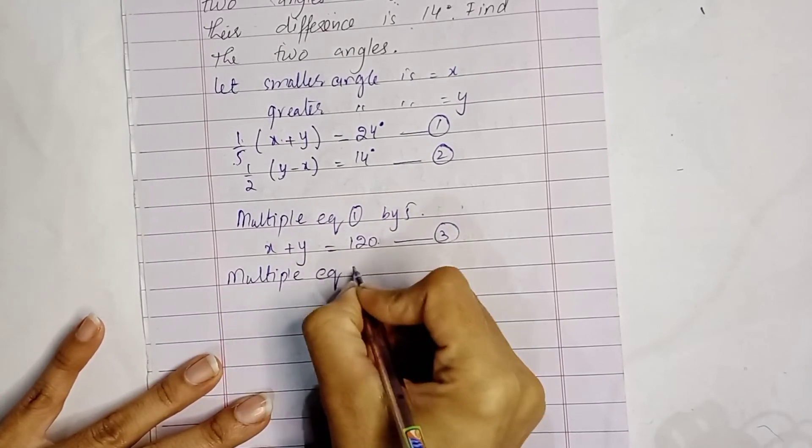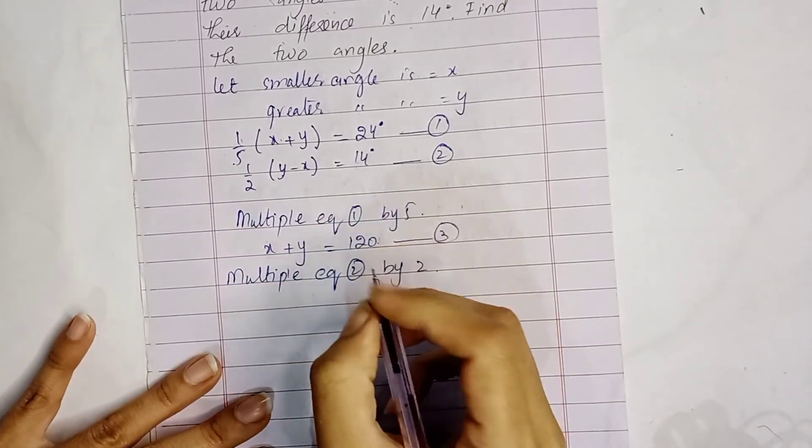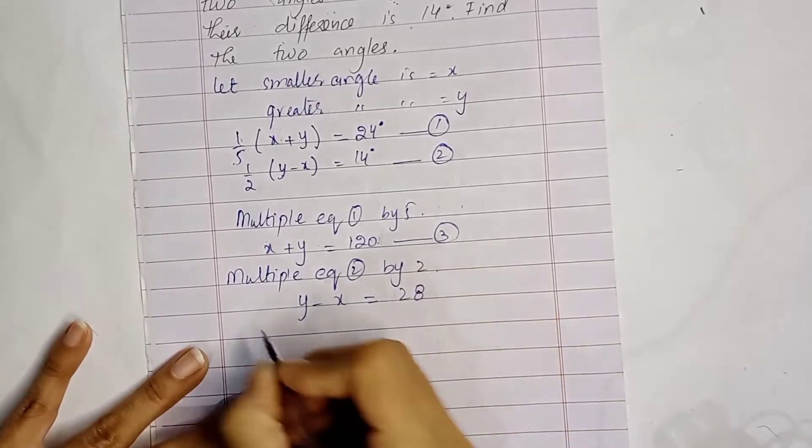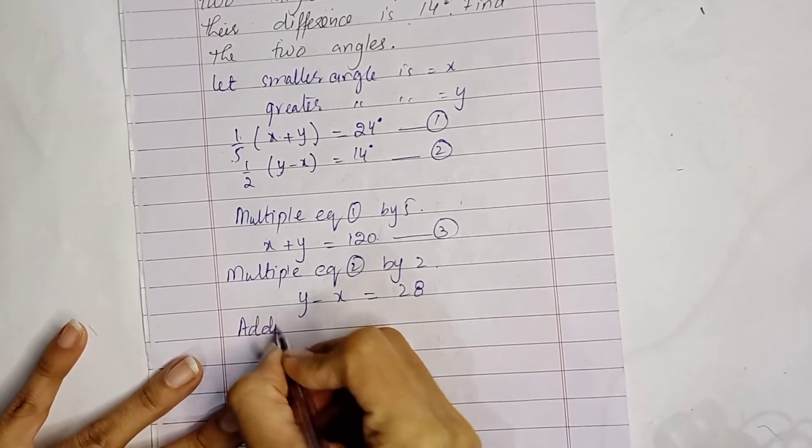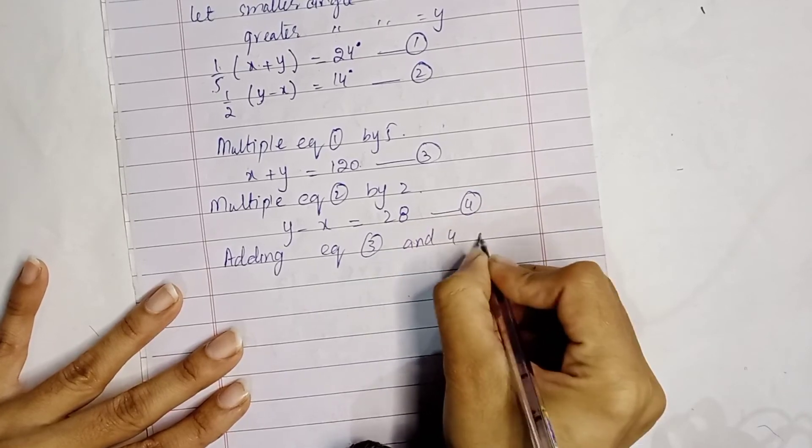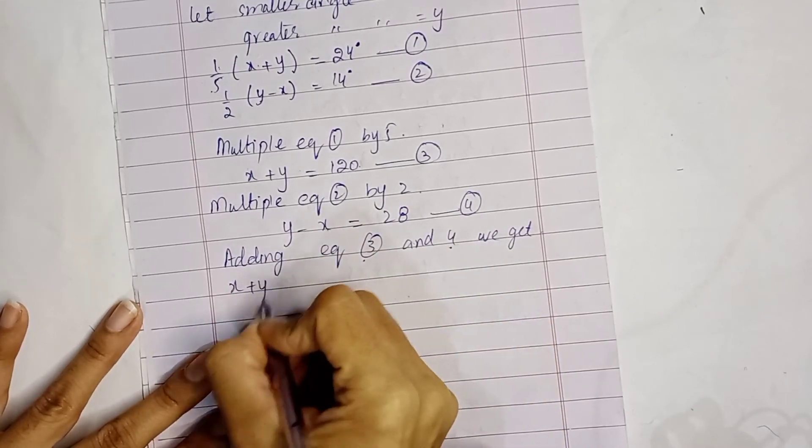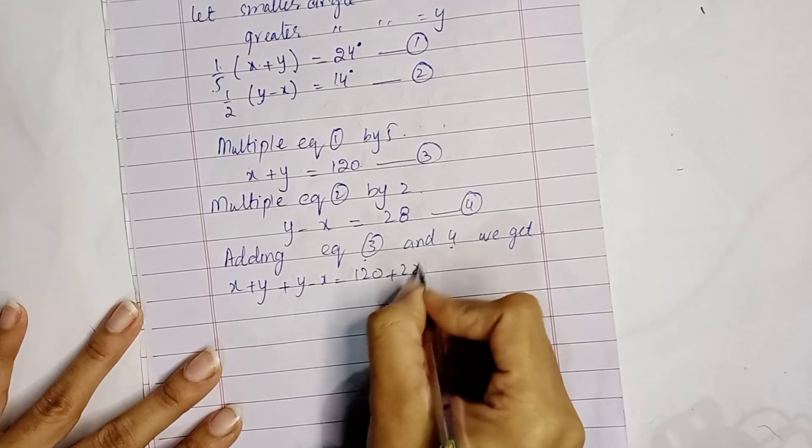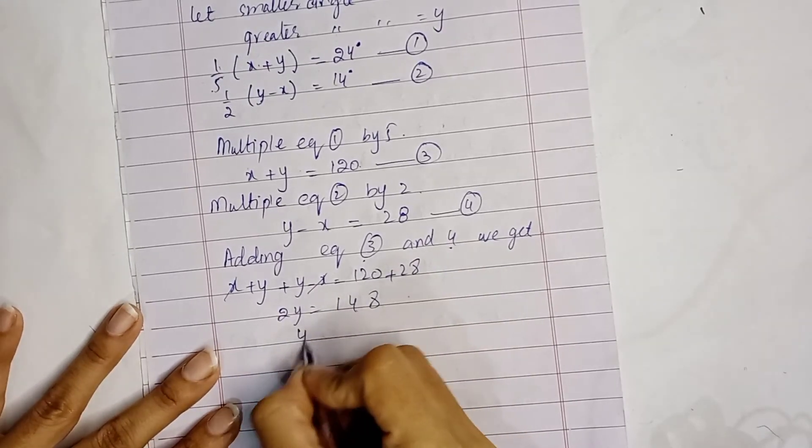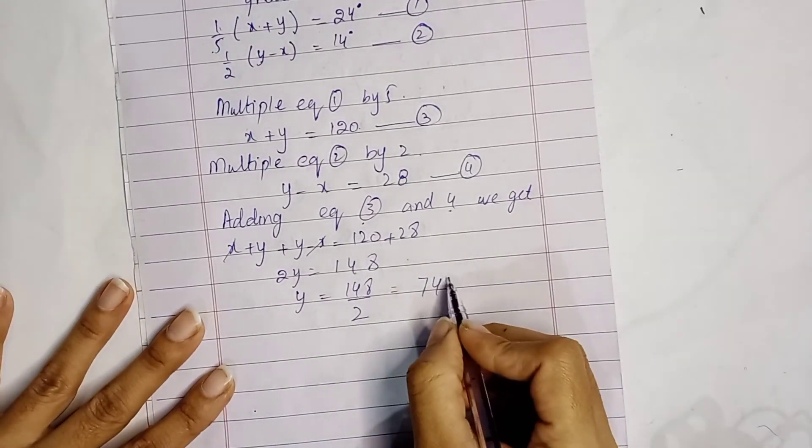Multiply equation 2 by 2: y minus x equals 28. This is equation 4. Adding equations 3 and 4, we get 2y equals 120 plus 28, which is 148. 148 divided by 2 we get 74.